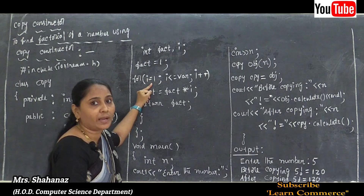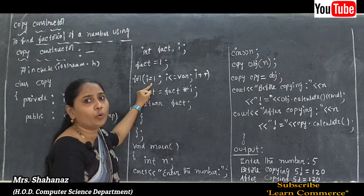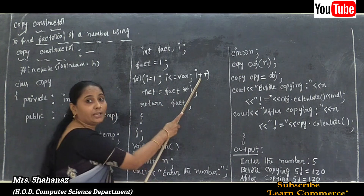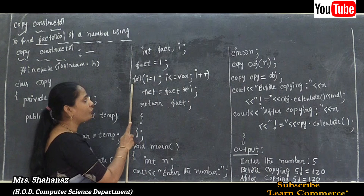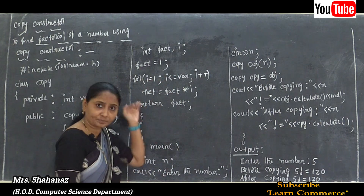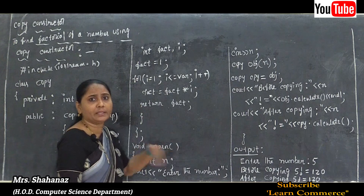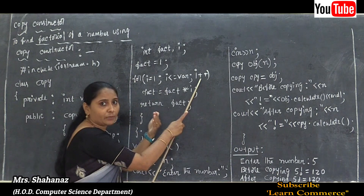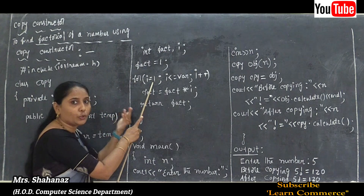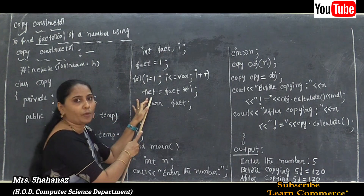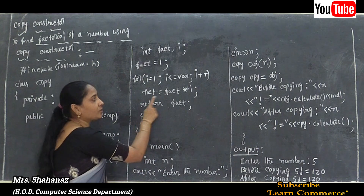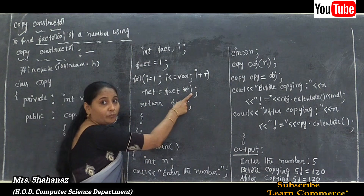We use a for loop: for(i = 1; i <= var; i++). We start i at 1, not 0, because if we start at 0, any multiplication would give zero — the answer would always be 0. The condition is i <= var, where var holds the entered number. Each iteration, i increments and performs the calculation using both fact and i.